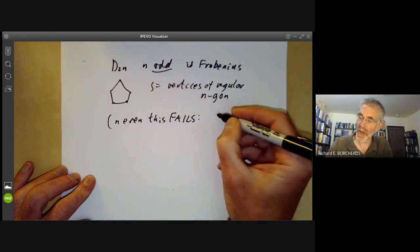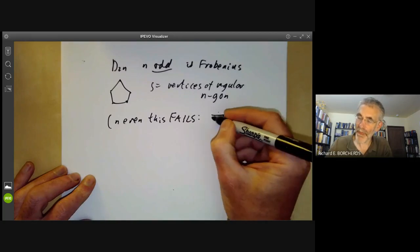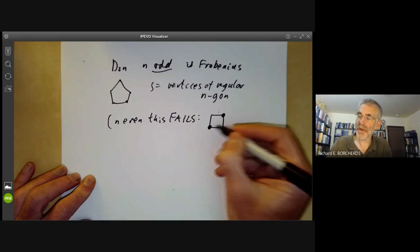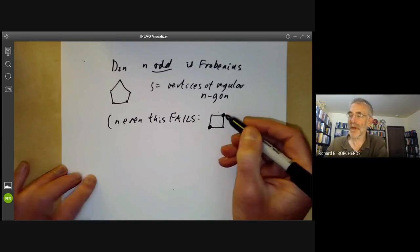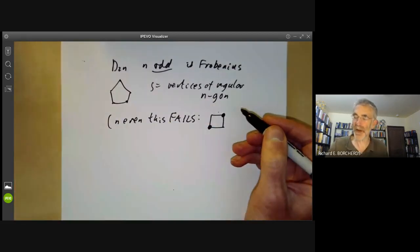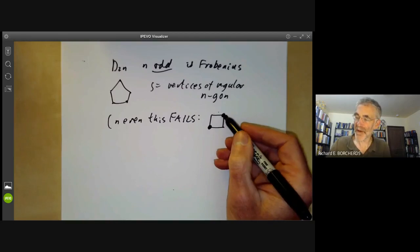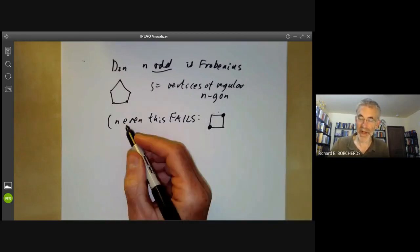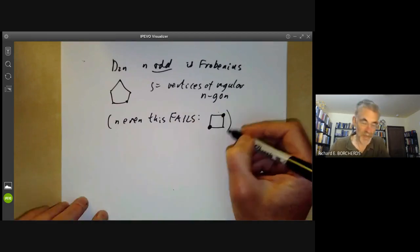For example, if we take a square, then there is a non-trivial automorphism fixing these two vertices, because we can just flip the square like that. So if there are two vertices that are diagonally opposite each other, as happens for n even, then we don't get a Frobenius group.